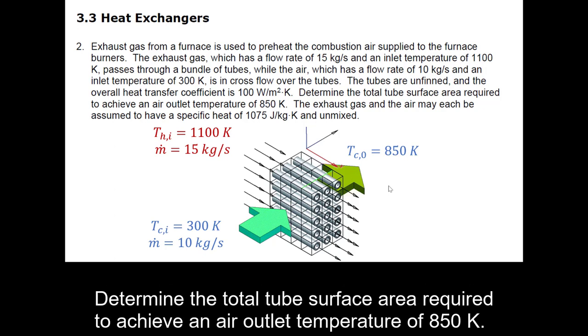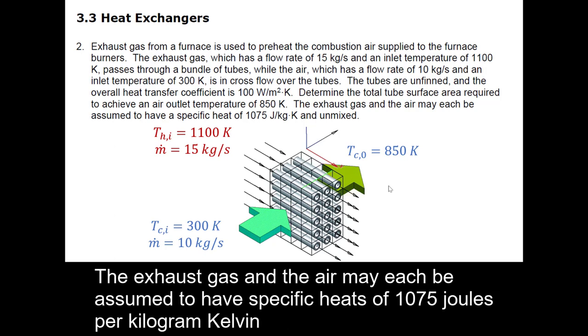Determine the total tube surface area required to achieve an air outlet temperature of 850 K. The exhaust gas and the air may each be assumed to have specific heats of 1075 J/kgK.